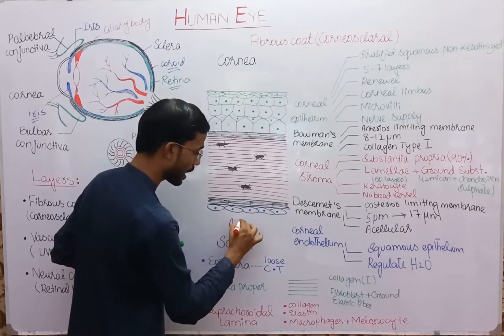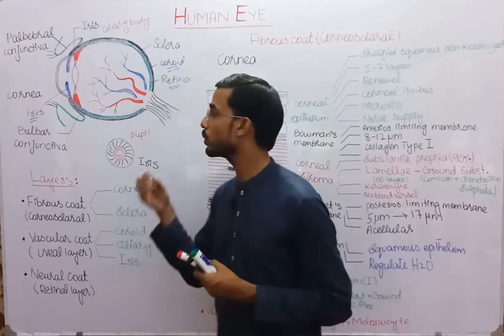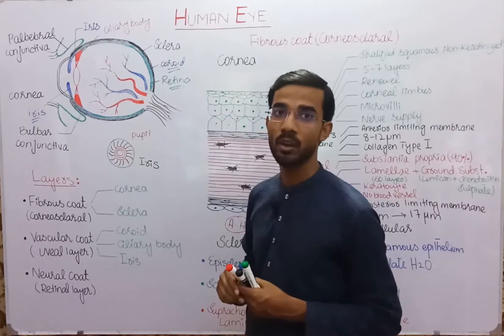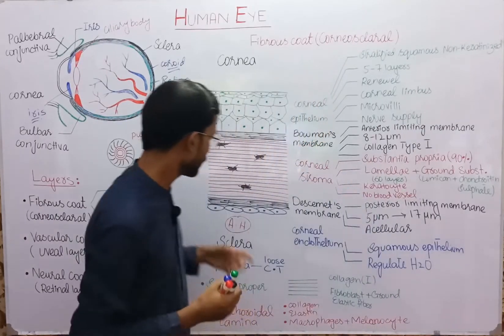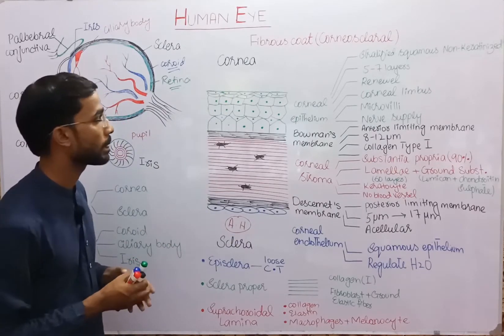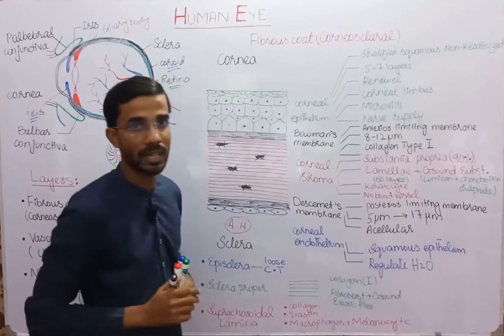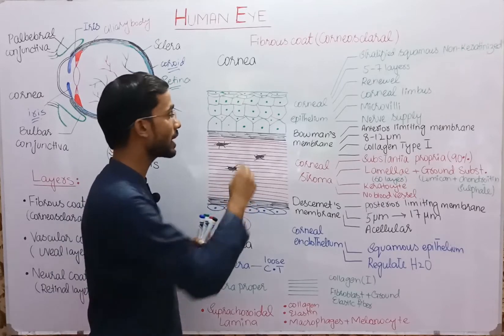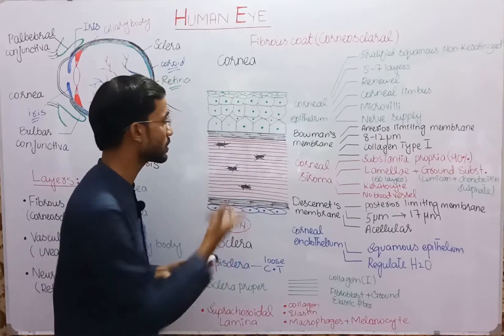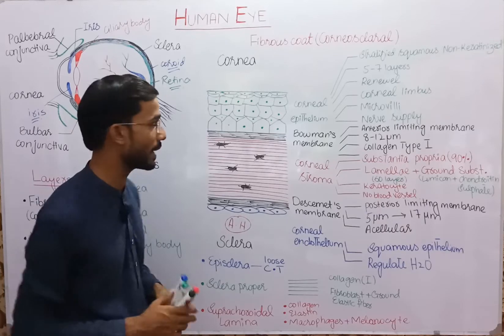There are two humors present in the eye: aqueous humor and vitreous humor. Aqueous humor touches the endothelium, and the endothelium faces inside the eye. The corneal epithelium is basically stratified squamous non-keratinized epithelium — stratified means multiple layers are present, squamous means flat cells, and non-keratinized means there is no keratin present.